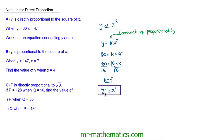So now we can substitute this value of k back into our equation. We have y is equal to 5 lots of x squared. This tells us that as x squared increases, y becomes 5 times bigger, and this defines the equation connecting y and x. Now let's move on to question b, where we've been told that y is proportional to the square of x again, so we can write this as y is proportional to x squared.